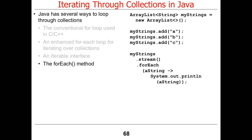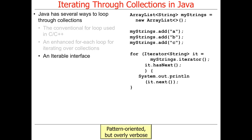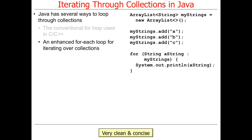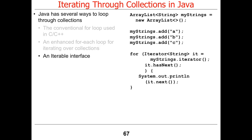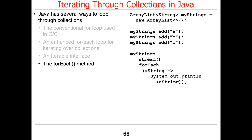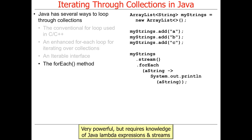For all the forEach ways of doing the loop, is there a way to get the index? No, you'd have to keep a counter yourself. The forEach construct does not provide an implicit counter, which is why you would use this form if you didn't need to have a counter.